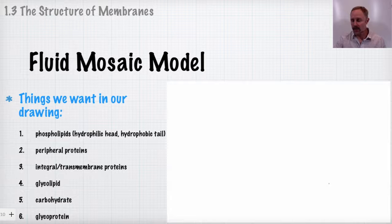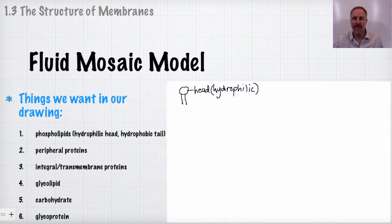So when we look at the fluid mosaic, there's some things that we want to be able to draw in a drawing if we were asked to do so and based on our knowledge of what it was. So if we're going to draw a phospholipid, the best thing to do is to just kind of have a little circle here. That would be the hydrophilic head. And then these two tails, these would be the hydrophobic tails. So this would be the head region. And we can say that it's hydrophilic or water-loving and it's going to face either the exterior side of the cell or the actual interior side of the cell. And then these here, these are the hydrophobic tails.